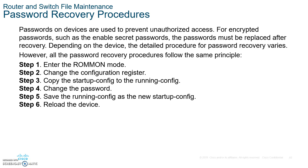Once it reboots, copy the startup config to the running config by typing copy start run. The passwords you didn't know are now in the running config. Now change the passwords — type enable secret (new password), then configure line console, line VTY, and any other passwords. Once done, change the configuration register back to normal by typing config-register 0x2102, hit enter, then type exit.